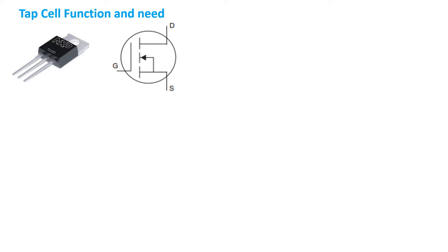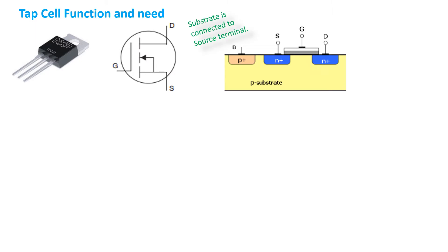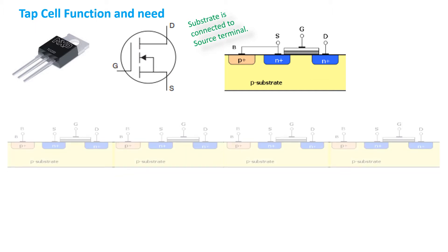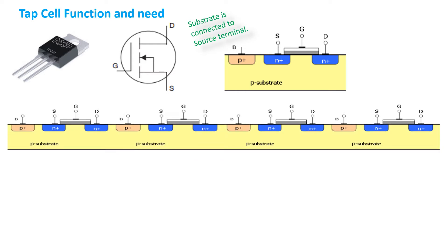Before we go further, let us consider the discrete MOS transistor, which is a three-terminal device. Its symbolic representation shows G for gate, D for drain, and S for source. You will also observe that the source and substrate are tied together, and externally only the substrate-source terminal is visible. So symbolically it is represented as a three-terminal device, as also shown by the IC. Assume that in a SoC design environment...